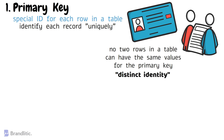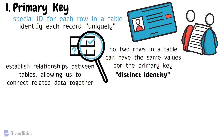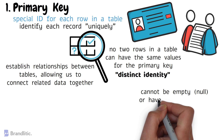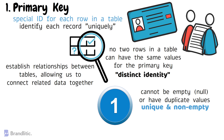The primary key is important because it guarantees that we can find and retrieve specific records quickly. It also helps us establish relationships between tables, allowing us to connect related data together. Additionally, to make sure that the primary key is reliable, it cannot be empty or null, and cannot have duplicate values. In other words, it must be unique and non-empty for each row. Only one primary key can exist in a table.